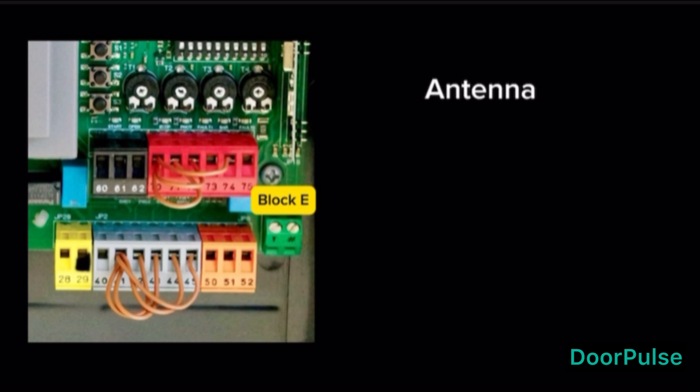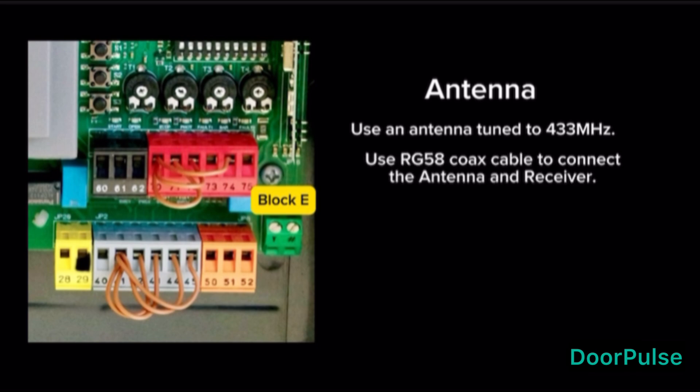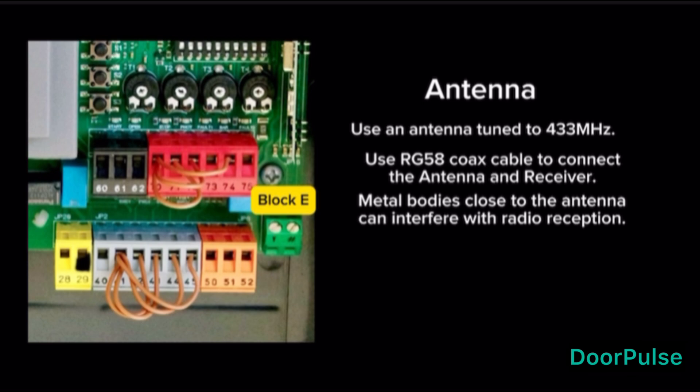Block Y, Antenna Block. Terminals Y and hash, antenna input. Use an antenna tuned to 433 MHz. Use RG58 coax cable to connect the antenna and receiver. Metal bodies close to the antenna can interfere with radio reception.